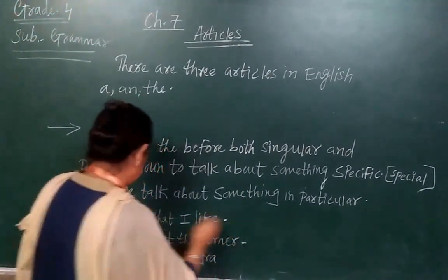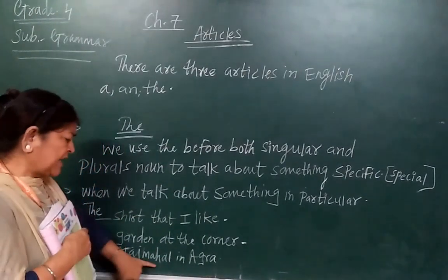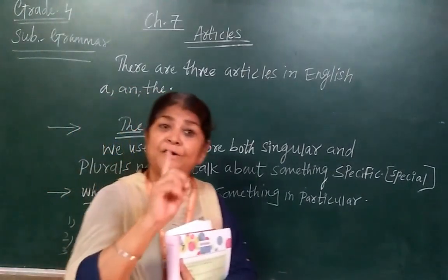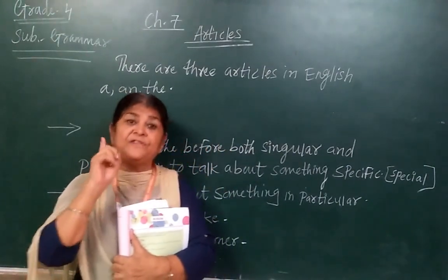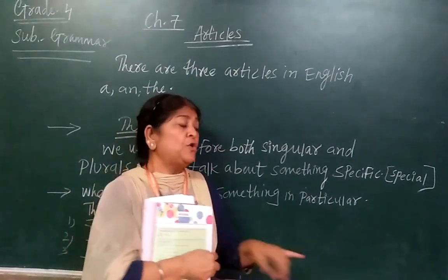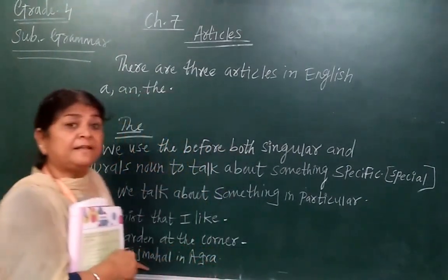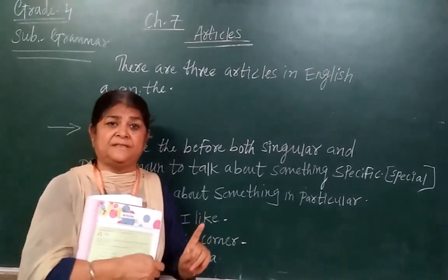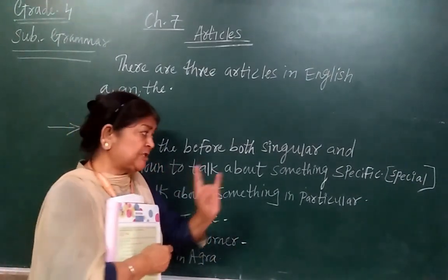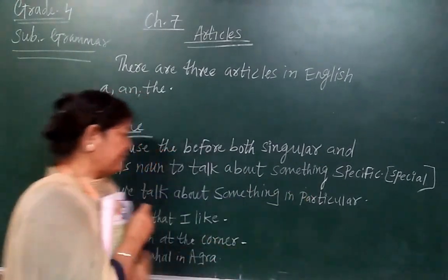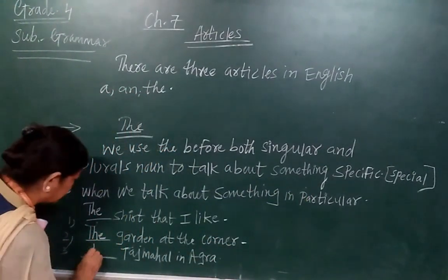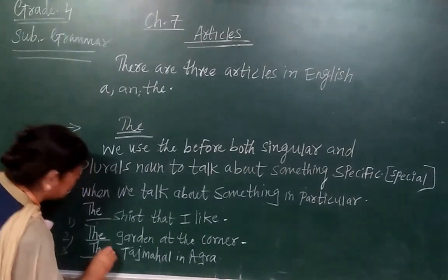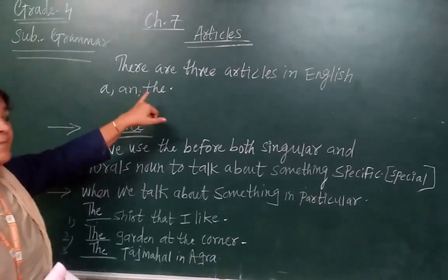Number three: blank — Taj Mahal in Agra. Agra is the only city here, and Taj Mahal is only one. So what do I write here? 'The.' Because Taj Mahal is only one — a special, specific name. So I will write 'The Taj Mahal in Agra.'